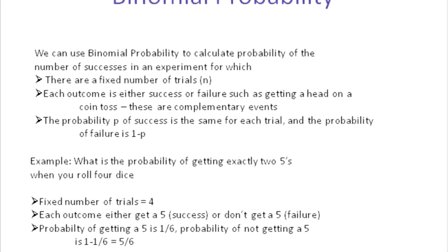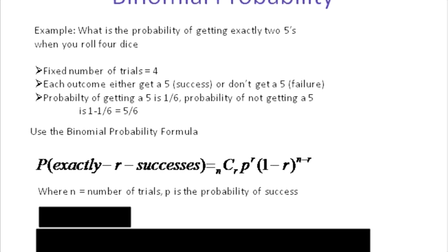As long as we can look at the question and decide that you're doing a fixed number of trials — like tossing a coin a hundred times — and that every time you do this trial the probability is the same for getting a success, we're set. In this case, getting a five is a success. Not getting a five is a failure. The probability of success is one sixth, and the probability of not getting a five is five over six.